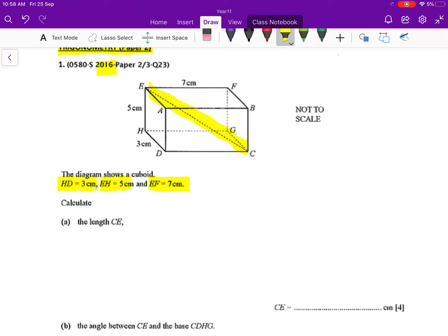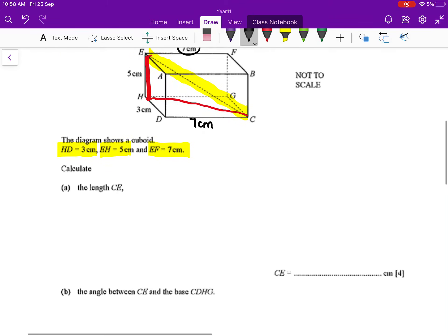So for you to calculate the length of CE, you need to calculate your CH first where you can see this triangle. Okay, so that's very easy for us to calculate this hypotenuse of CE if we have the length of CH. So basically, if EF is 7, your DC also is equal to 7 cm.